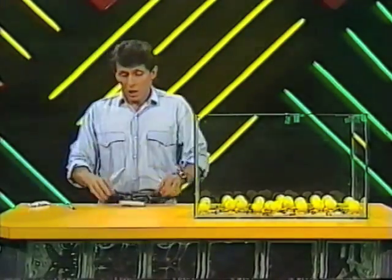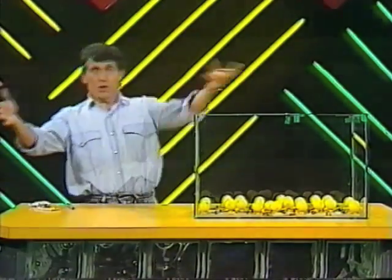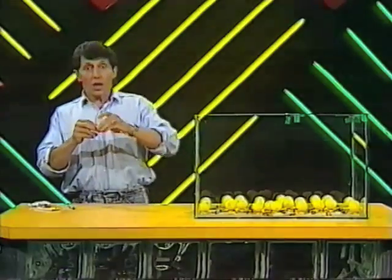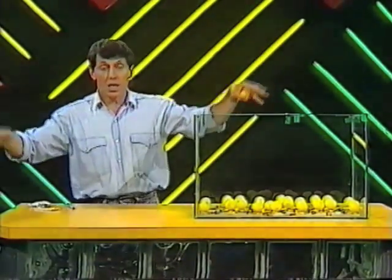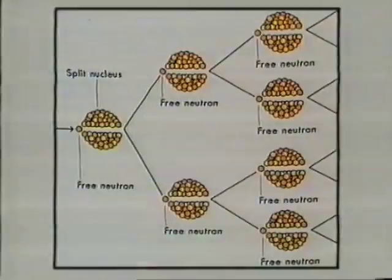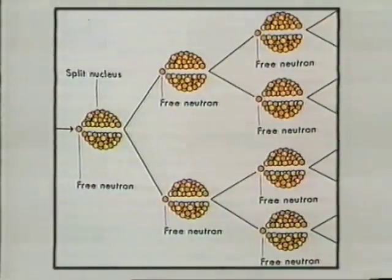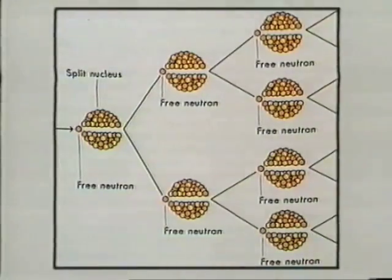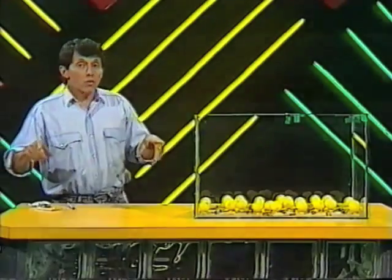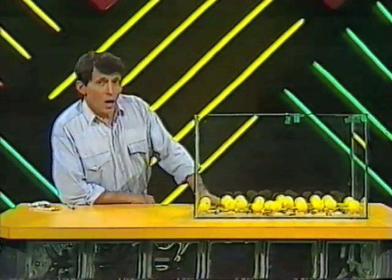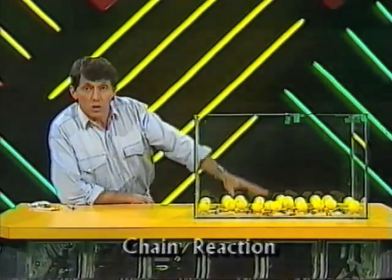Wouldn't it be fun if we had a couple of other mousetraps set up in the studio so that the flying ping pong balls landed on those? Then we'd have more ping pong balls flying in the air, and more, and more, and more. It'd be something like what's happening in this diagram here. It's called release of nuclear energy, because when one uranium atom is split by a neutron, it releases two or more neutrons — they can split more uranium atoms, and more and more. Eventually we get what's called a chain reaction, and a huge amount of energy is released.